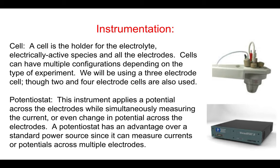We have two items here: the cell and the potentiostat. The cell is simply a holder that holds our electrodes and our conducting solution. In this experiment, we're going to use a three-electrode system. That'll consist of a working, reference, and counter electrode. However, there can be other setups including two and four electrode cells. Our potentiostat is an instrument that can simultaneously apply a potential while measuring the current.